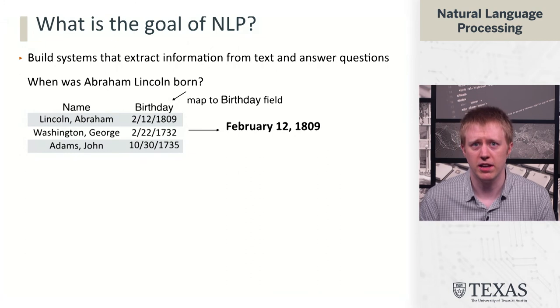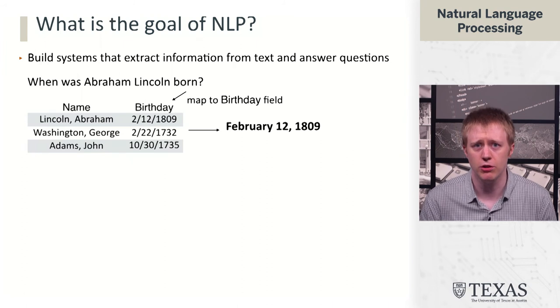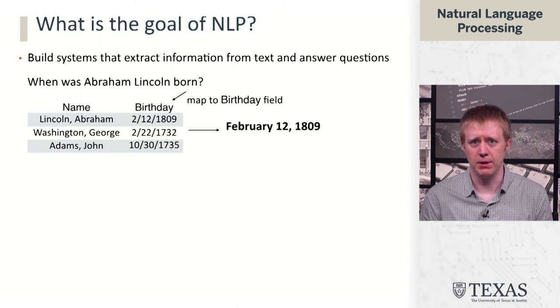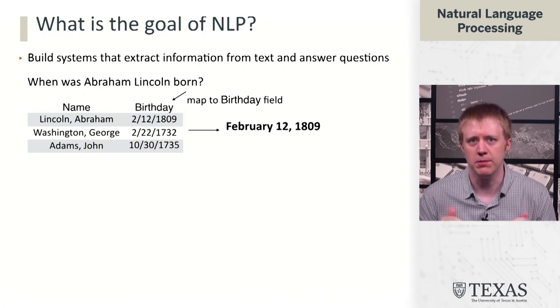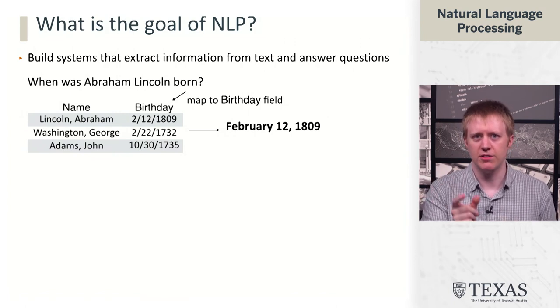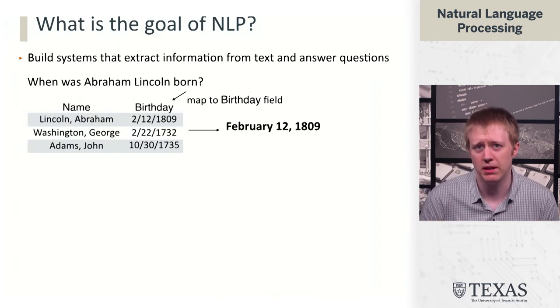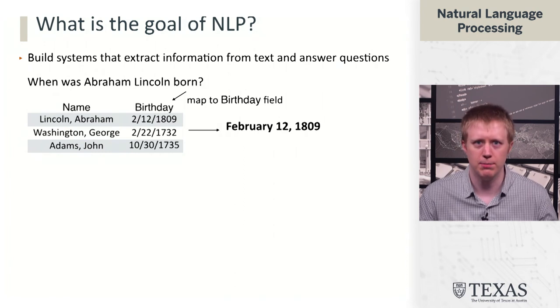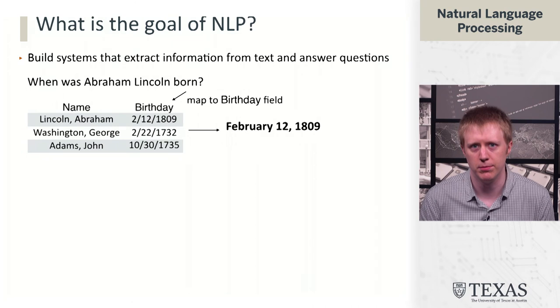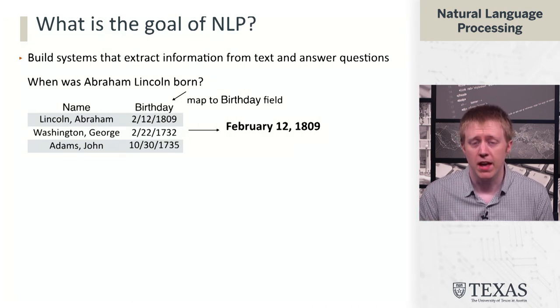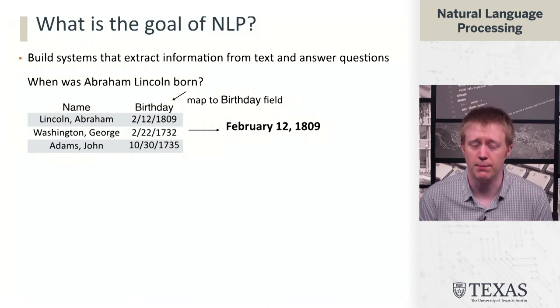A final example is systems that extract information and answer questions. If you type 'when was Abraham Lincoln born' into Google, something like the following happens. We recognize that 'born' means we've got a big database of people and names, and we need to map the idea of someone being born to this birthday field in the database. That doesn't sound all that complicated, but once you get a large database with a whole bunch of different columns and many ways of asking about them, it actually becomes a fairly involved problem. We need to retrieve the right birthday from this database.